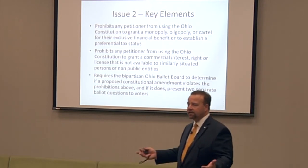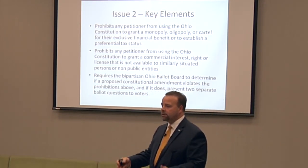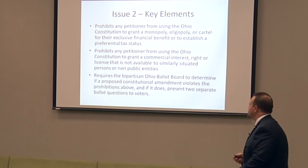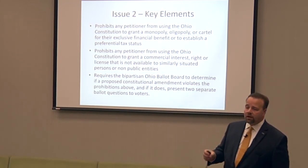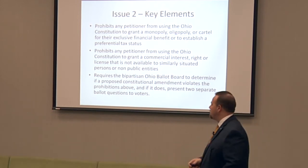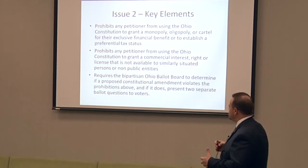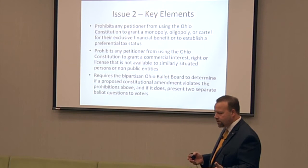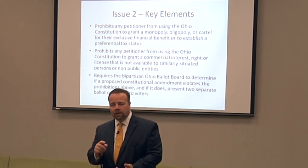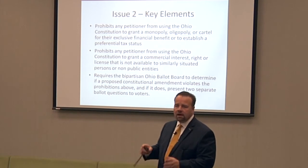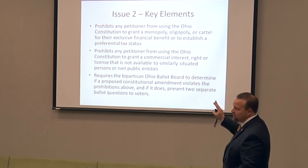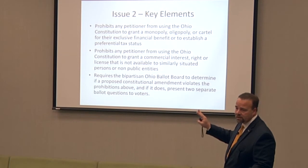Like ten farmers out of 70,000 being able to farm marijuana to the exclusion of everybody else. It also prohibits any petitioner from using the Ohio Constitution to grant a commercial interest right that some other similarly situated group can't have. And it requires the Ohio ballot board — which decides on the language, issue numbers, and all that — to look at each petition and ensure it doesn't meet these prohibitions.